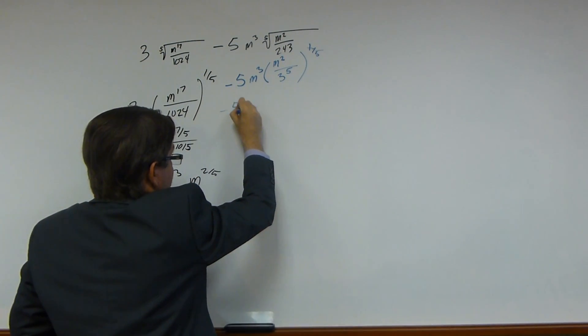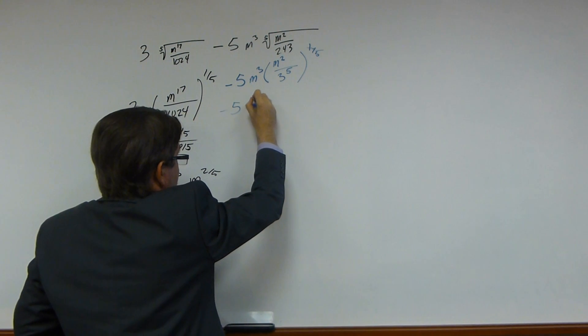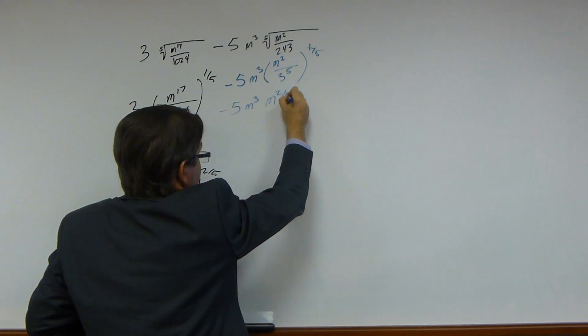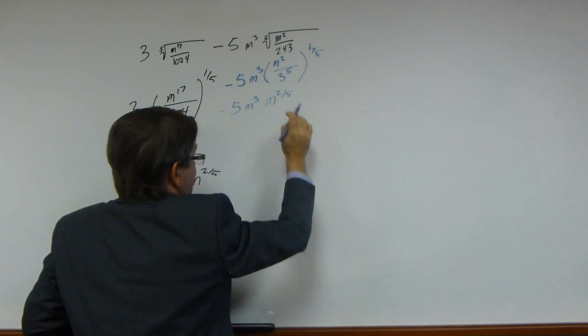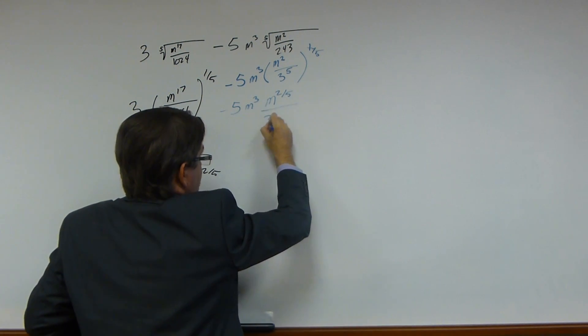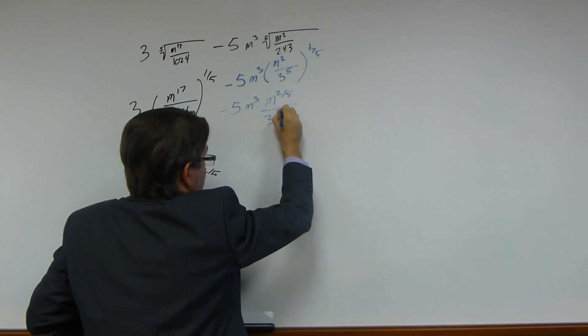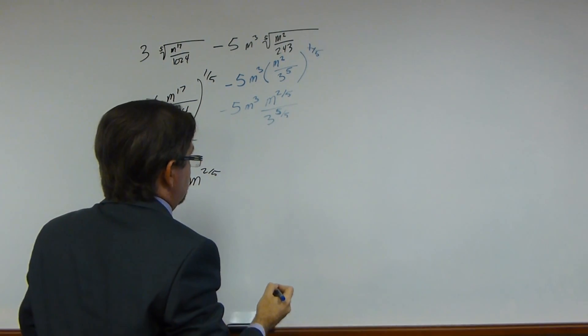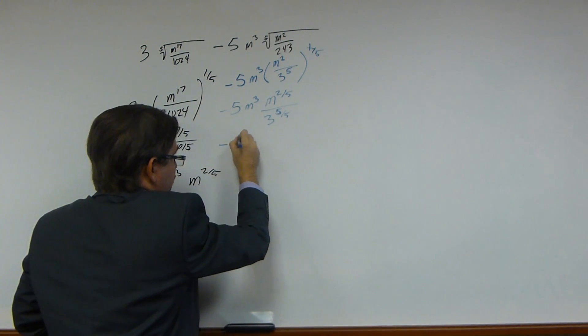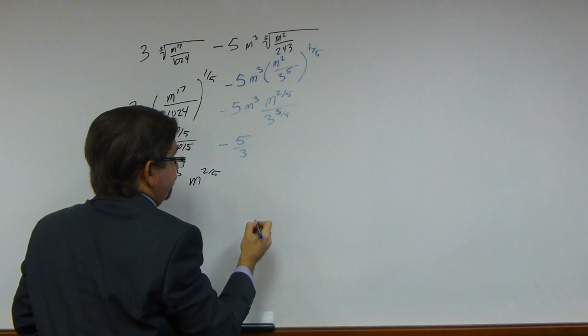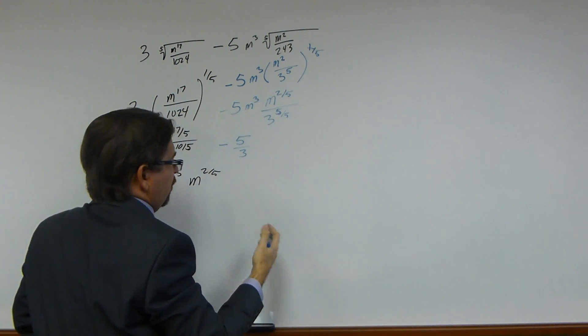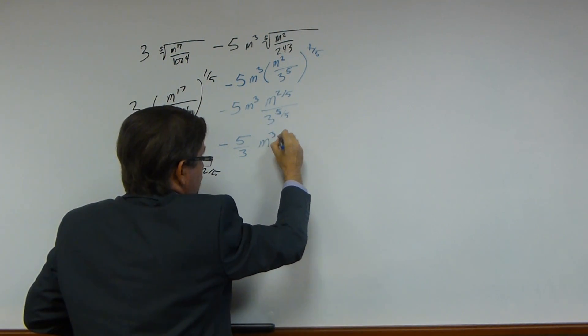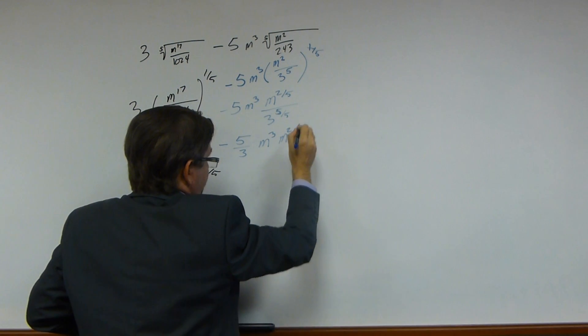So we have minus 5 times m to the 3rd power, m to the 2 fifths power, because 2 times 1 fifth is 2 fifths. 3 to the 5th power divided by 5. 5 divided by 5 is 1. What we really have here is minus 5 divided by 3. 3 to the 1st power is 3. m to the 3, m to the 2 fifths.